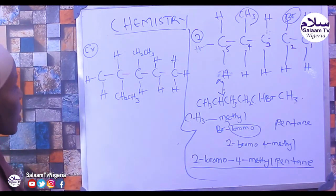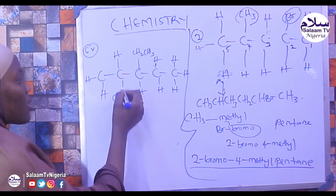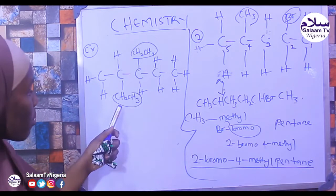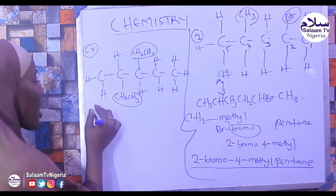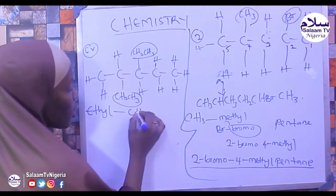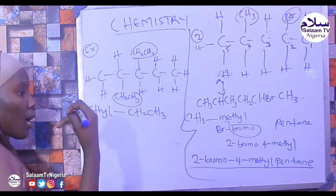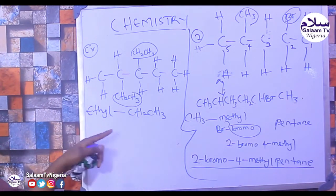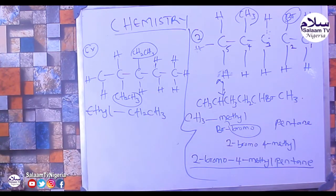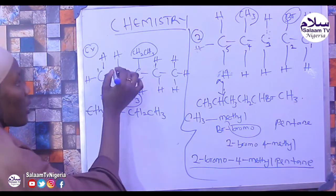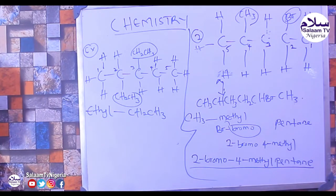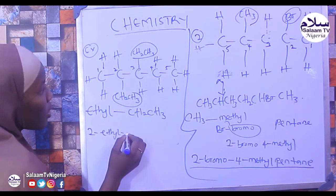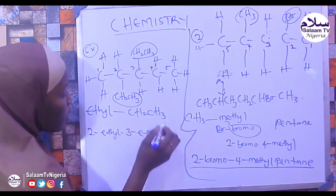Example 3. To name this compound, we have the same substituent type. The compound contains ethyl groups — CH2CH3, which is ethane losing one hydrogen, so it becomes ethyl. The longest carbon chain is 1, 2, 3, 4, 5 — the parent name is pentane. The substituents are ethyl at position 2 and ethyl at position 3.